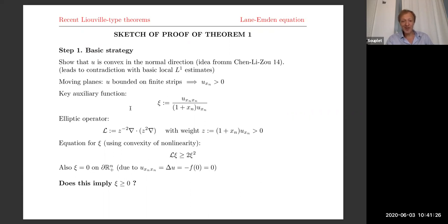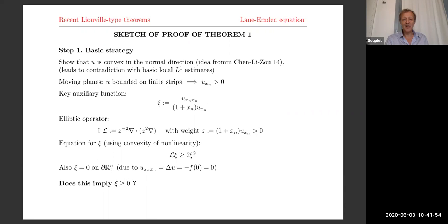This function ψ has a very nice equation. We don't write the equation in the same way as Chen-Li-Zhao — this is where we start to add new ingredients. We consider a weighted divergence-form operator. The weight is positive. It turns out that ψ satisfies an equation, not just an inequality. You can drop the additional term containing F double prime since F is convex. This gives an inequality: Lψ is bigger than essentially ψ squared. Also ψ is zero on the boundary because U double prime equals f(U) there, so it's zero.